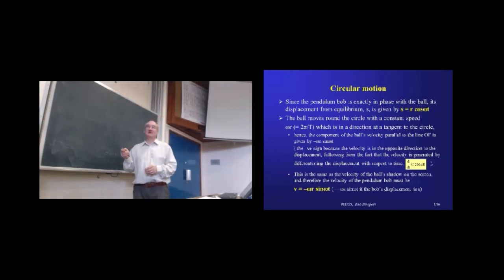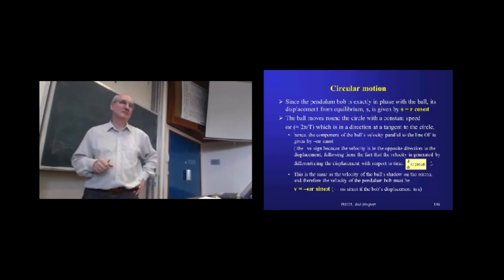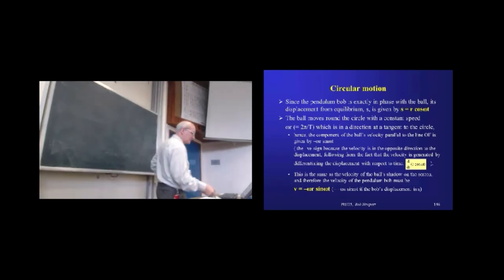So, we're always measuring with respect to the equilibrium position. So, if we've got a positive displacement, in other words, we've moved away from equilibrium, the velocity is going to be in the other direction. And, as I say, we've just got that by differentiating this. So, here's our equation for the velocity of the pendulum bob.